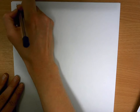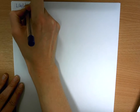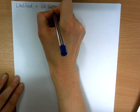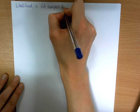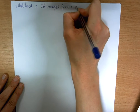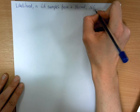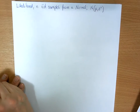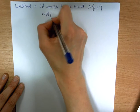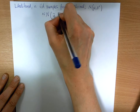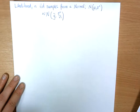We're going to look at the likelihood based on n IID samples from a normal distribution — n, mu, sigma squared. We've already shown that the sample mean is distributed normally with mean equal to the sample mean and variance of sigma squared over n.